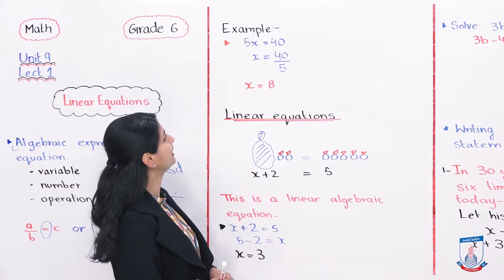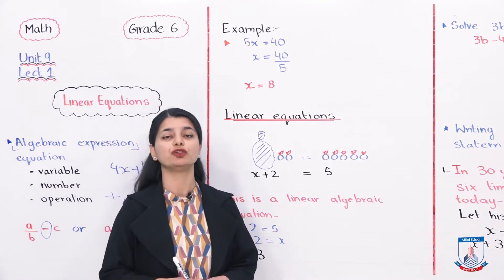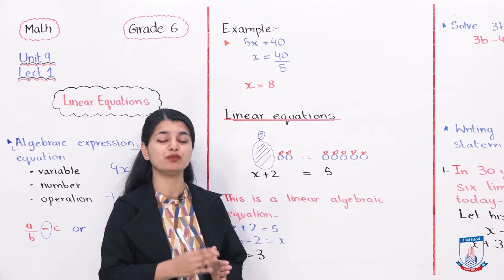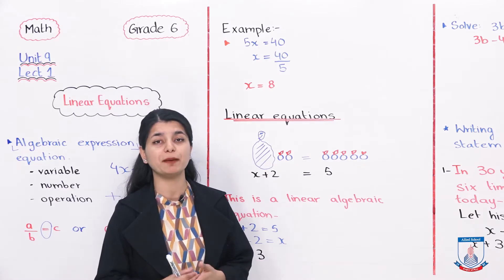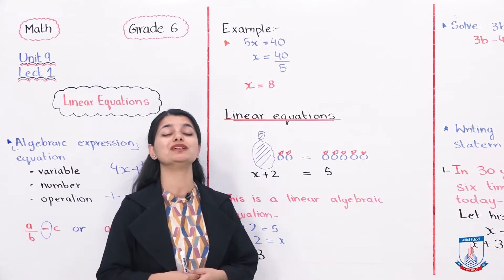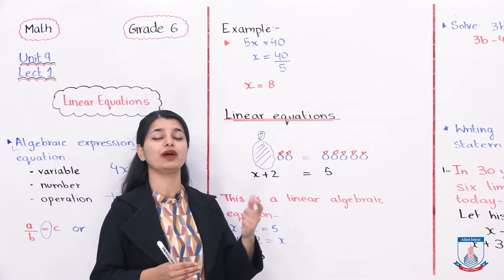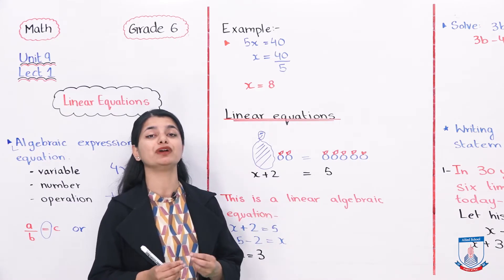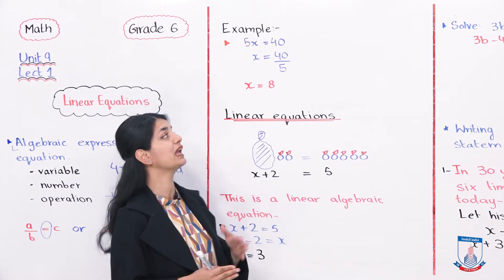If you can see here, 5x equals 40. We have told them that the value of 5x equals 40. This is an algebraic expression, but it is more of an equation. Why? Because there is a sign of equals — we are telling that the value of two things is equal. We have to figure out what the value of x will be.